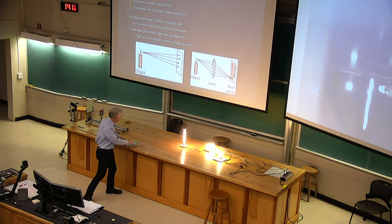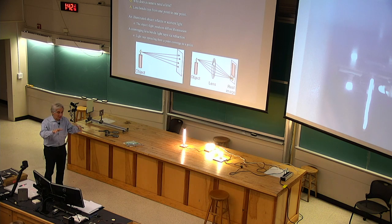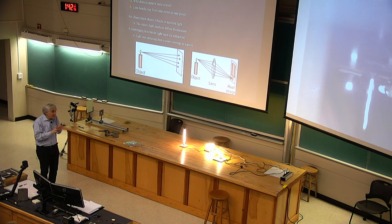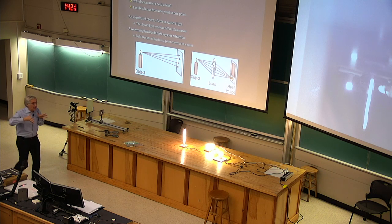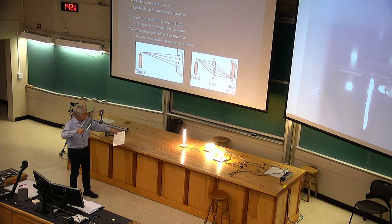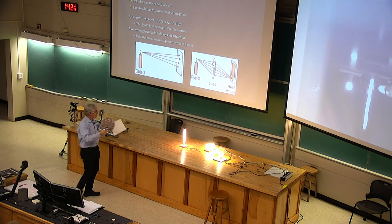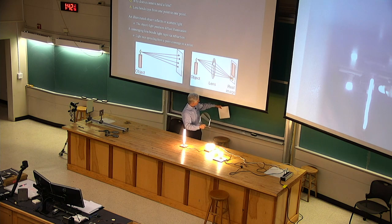If you put an object too close to a converging lens, the rays diverge so badly they don't come together at all. But they diverge differently than before — after passing through the converging lens, they look like they came from a more distant, bigger object. They never form a real image. They form a virtual image. And that's what a magnifying glass does — instead of forming a real image of you anywhere, it forms a virtual image back behind the lens, so you're looking at an enlarged version.